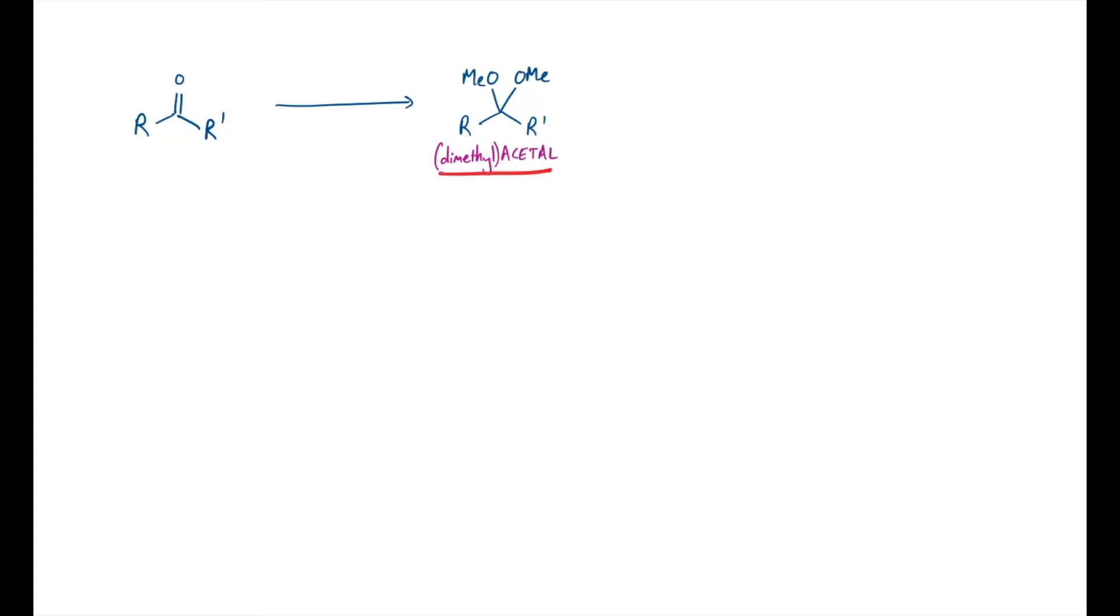An acetal is a functional group where you have an sp3 carbon and two oxygens attached to it. The functional group is quite common in nature, but can also be used strategically in synthesis. This is a dimethyl acetal because there are two methyl groups attached to the remaining oxygens.